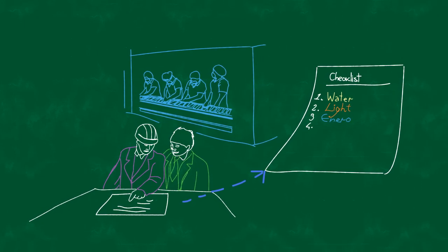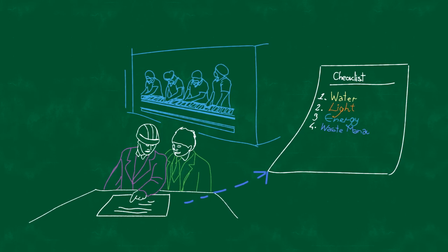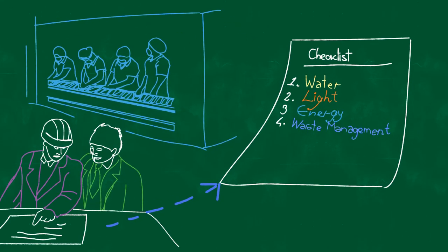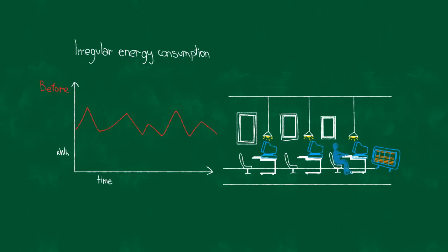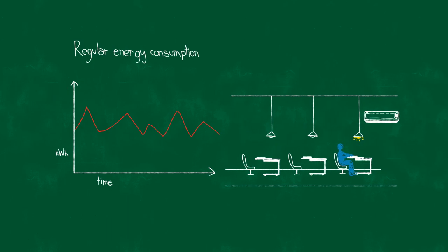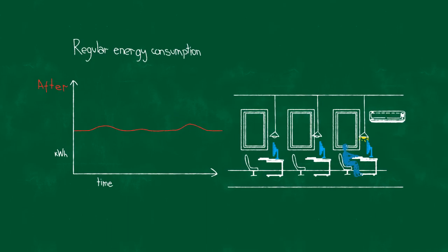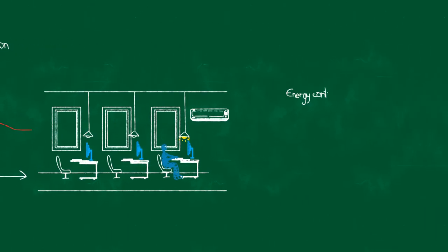Green loans can be used to cover the cost of conducting energy audits and environmental audits. These loans can also finance the implementation of the auditor's recommendations, such as the installation of a building management system to optimize a company's energy consumption.